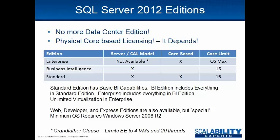Core-based licensing means that you license each physical core on the server, and you can have as many users connect — it doesn't matter if they have a CAL or not, because you're on core-based licensing. One thing to note is that Standard Edition enforces an upper limit of how many cores a SQL Server instance can see. That number is 16, so if you need to access more than 16 cores, you're going to have to step up in editions.